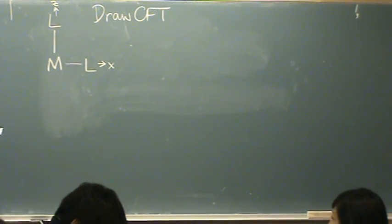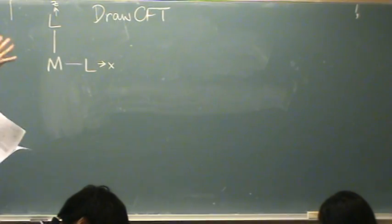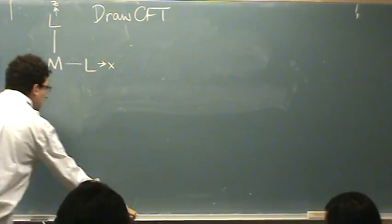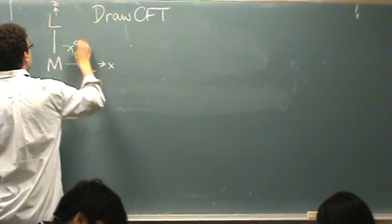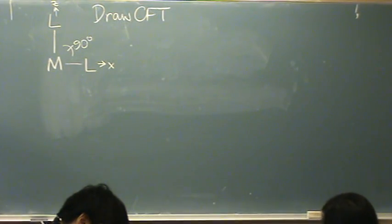What this question is about, you have a 90 degree unknown complex in it that forms a 90 degree angle. What it wants you to do is draw the expected CFT.